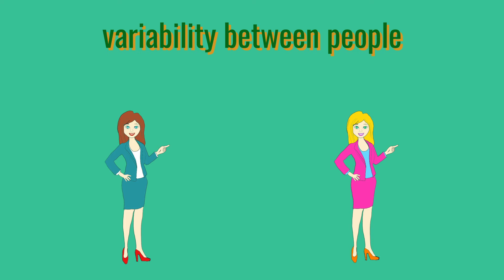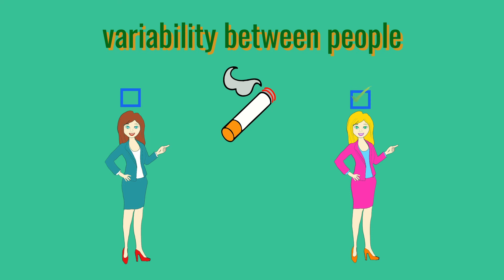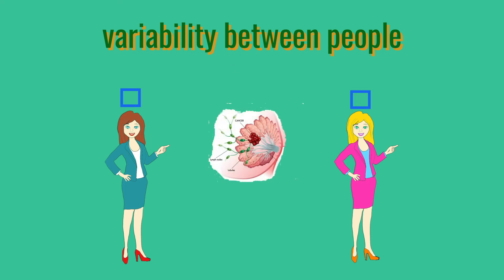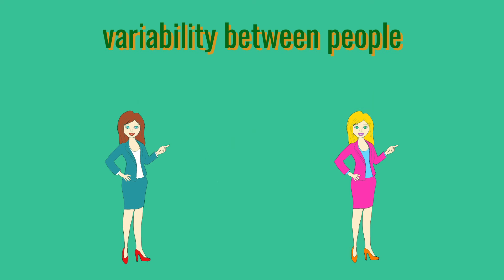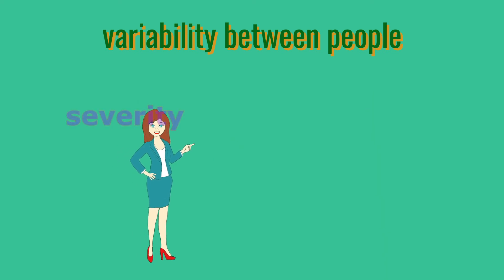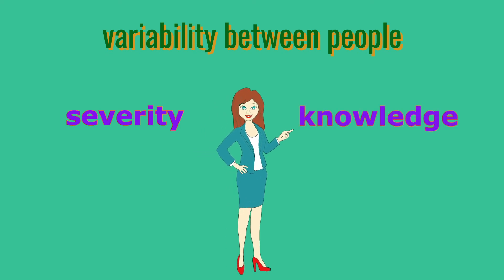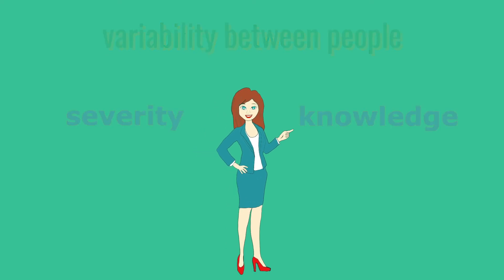For example, two people might both know that smoking is bad for them but only one starts smoking. Similarly, two people might find a lump in their breast but only one goes to the doctor. This variability indicates that health and illness cannot only be explained by illness severity or knowledge, but that other factors must have a key role to play.